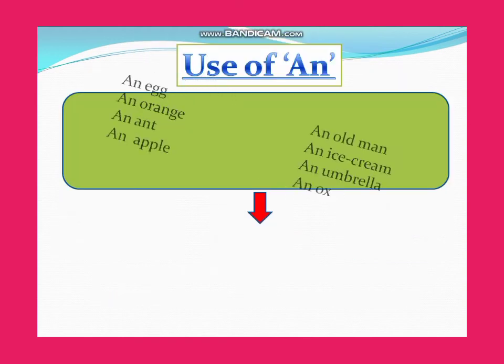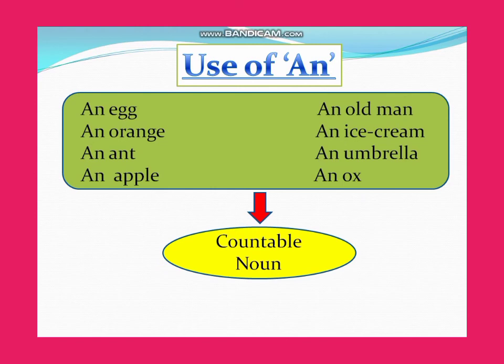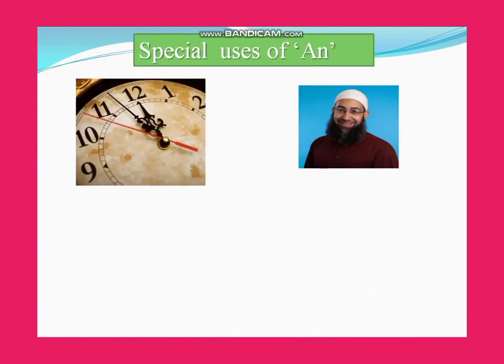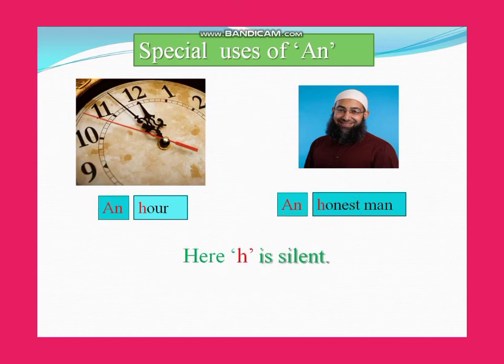Use of 'an': an egg, an orange, an ant, an apple, an old man, an ice cream, an umbrella, an ox — all are countable nouns. Special use of 'an': an hour, an honest man — here 'h' is silent.